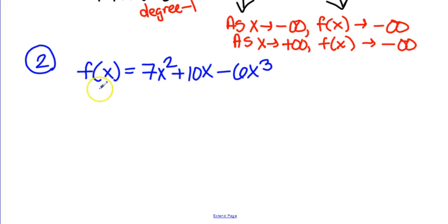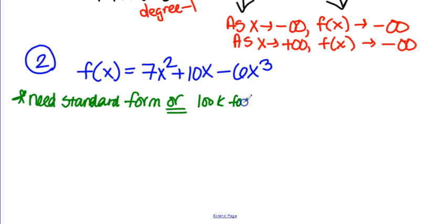So we left off by writing that our second example will be f(x) equals 7x squared plus 10x minus 6x to the third. Write yourself a quick reminder, need standard form or look for highest power. So technically, if we were doing synthetic, you would have to rewrite it. You have two strategies, rewrite it in standard form or look for the highest power. Because you need to know what that highest power is and what its leading coefficient is.